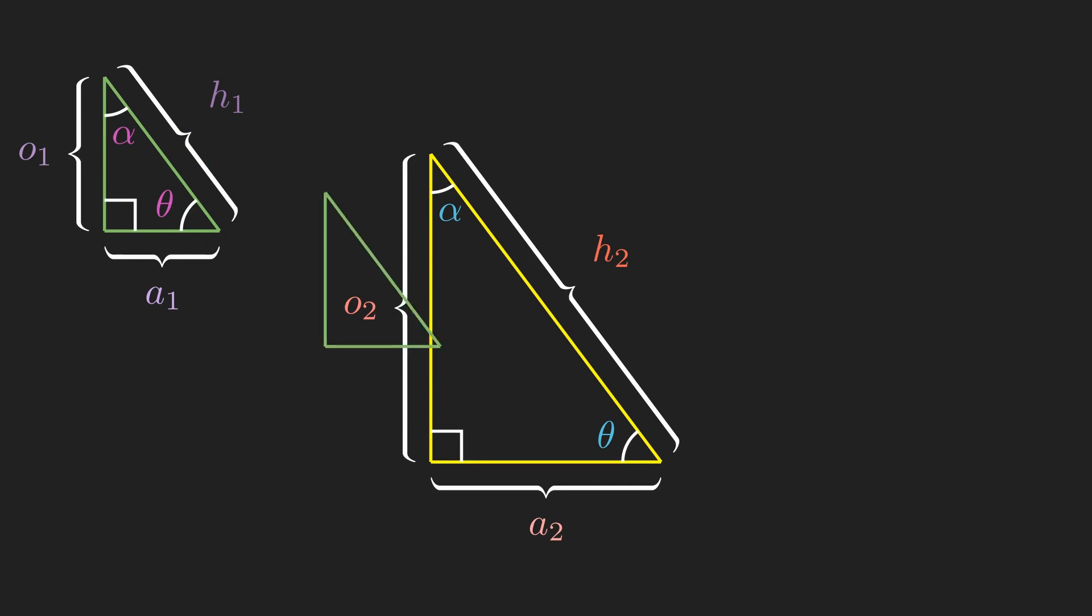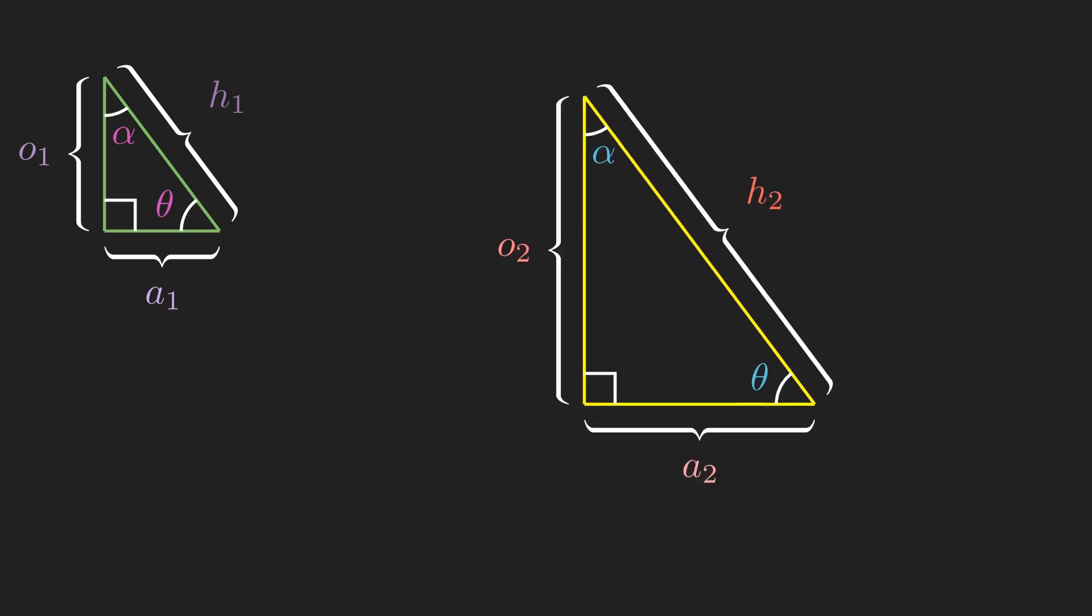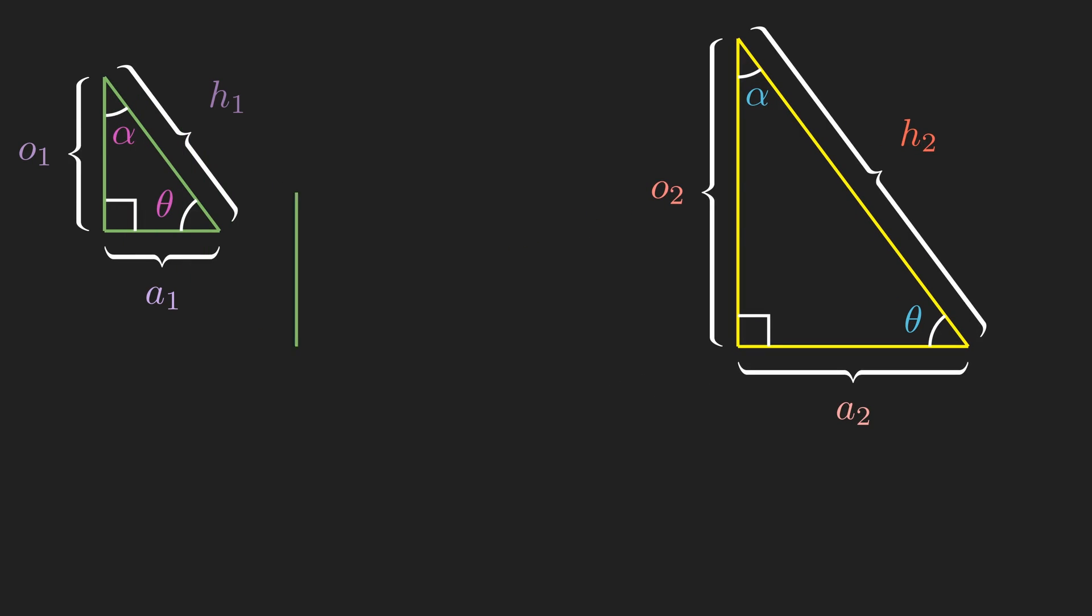To make that clear, you can see here our smaller triangle can be scaled exactly into our larger one. The angles are identical between them. Therefore, we can conclude that there's some number that links their sides. Perhaps one triangle has sides that are twice the length of the other.